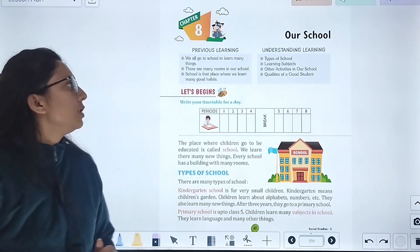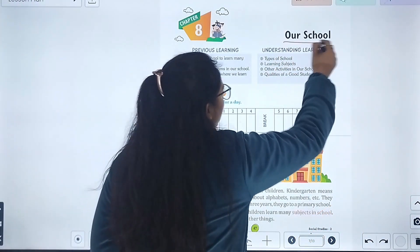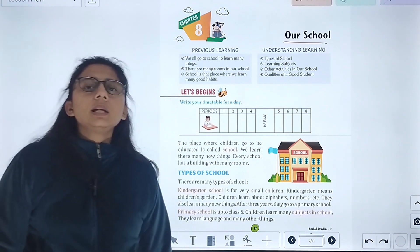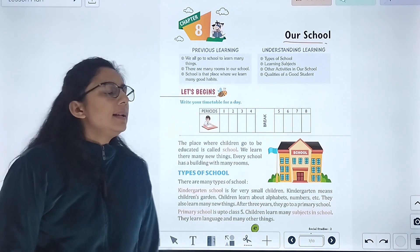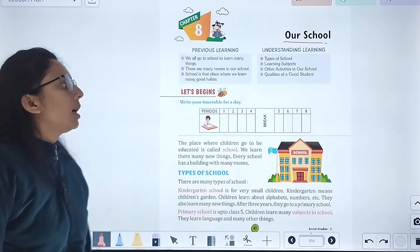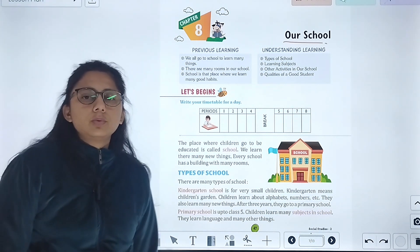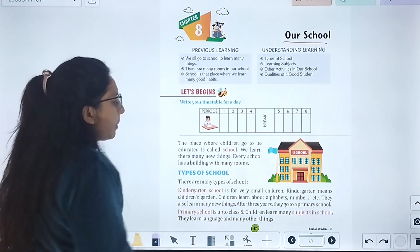Today we are going to start with Chapter number 8, Our School. In this chapter we will study about types of schools, learning subjects, our activities in our school, and qualities of a good student. Now let's start with the chapter.